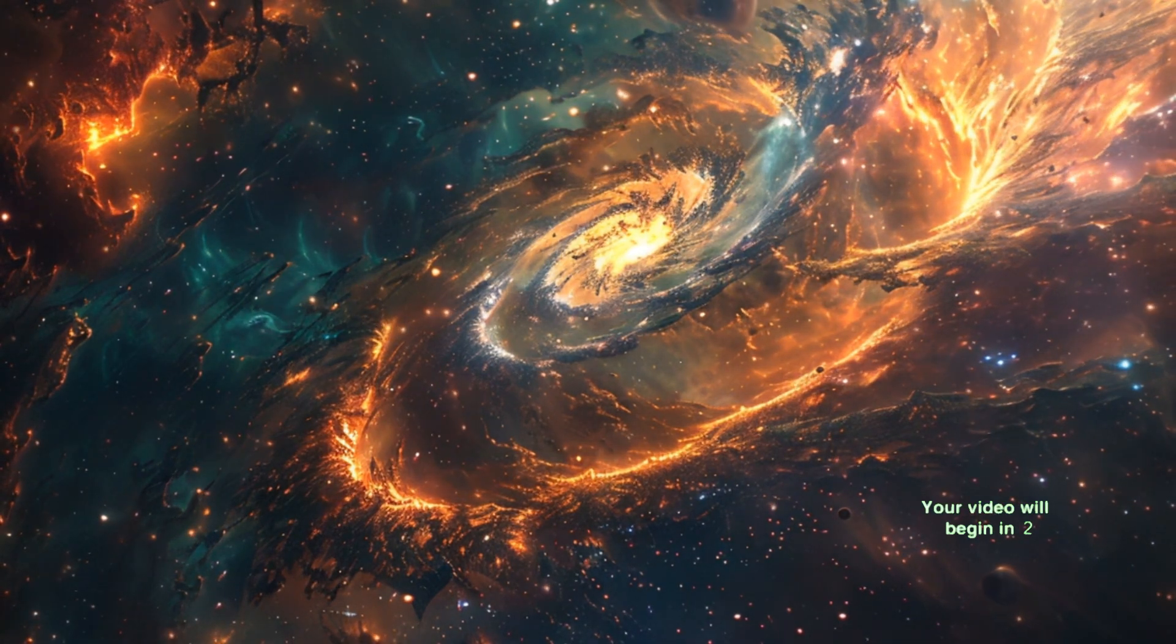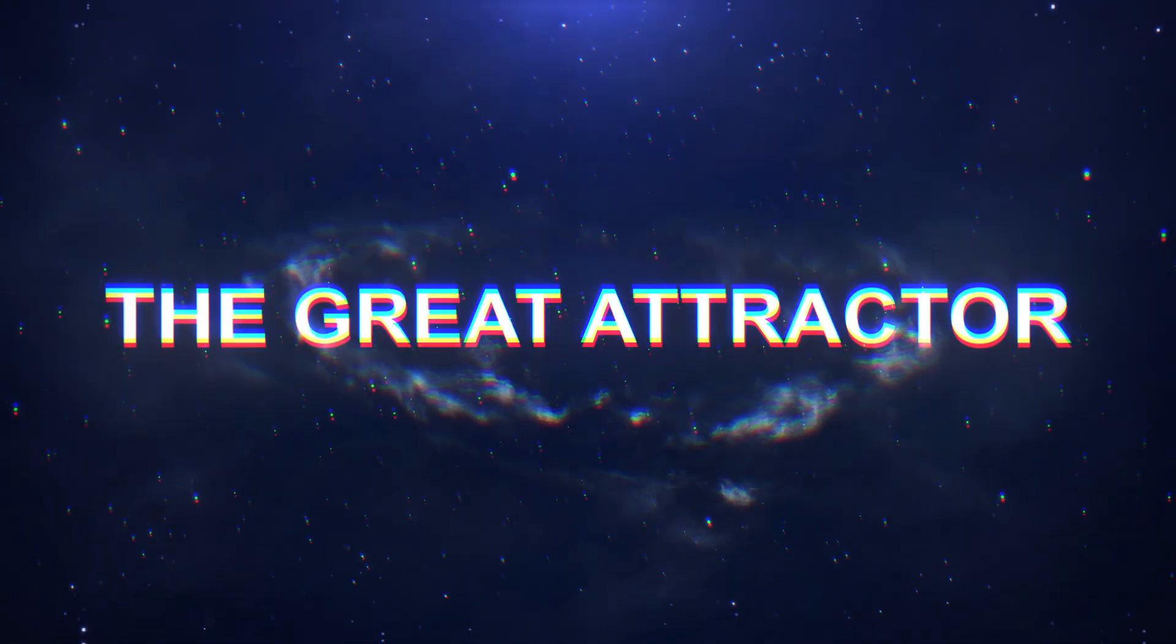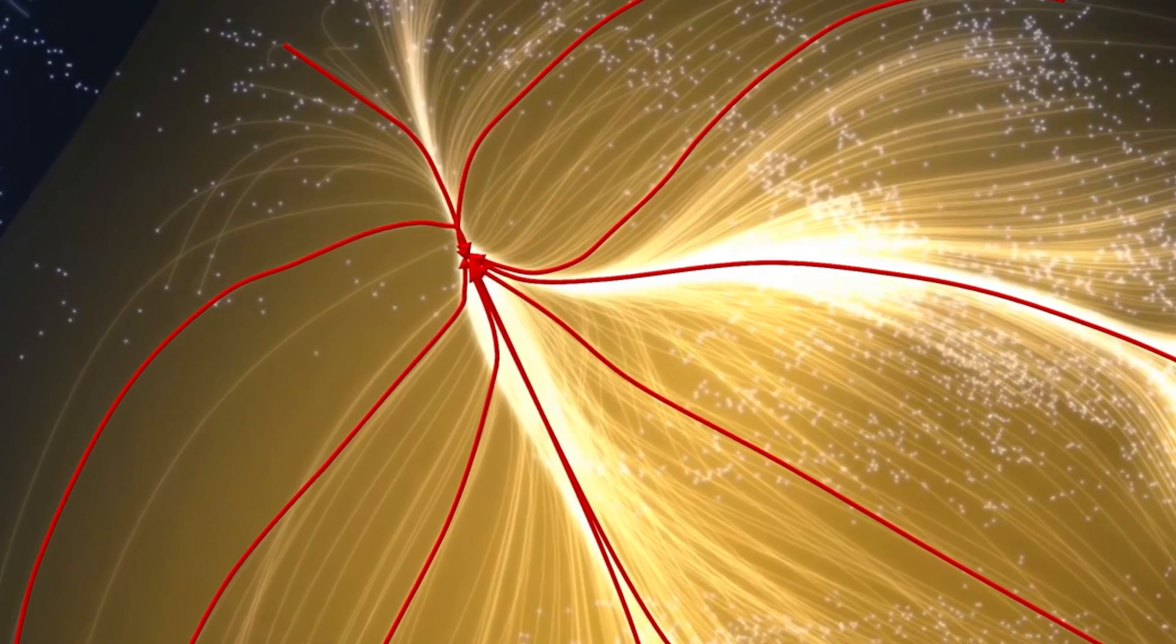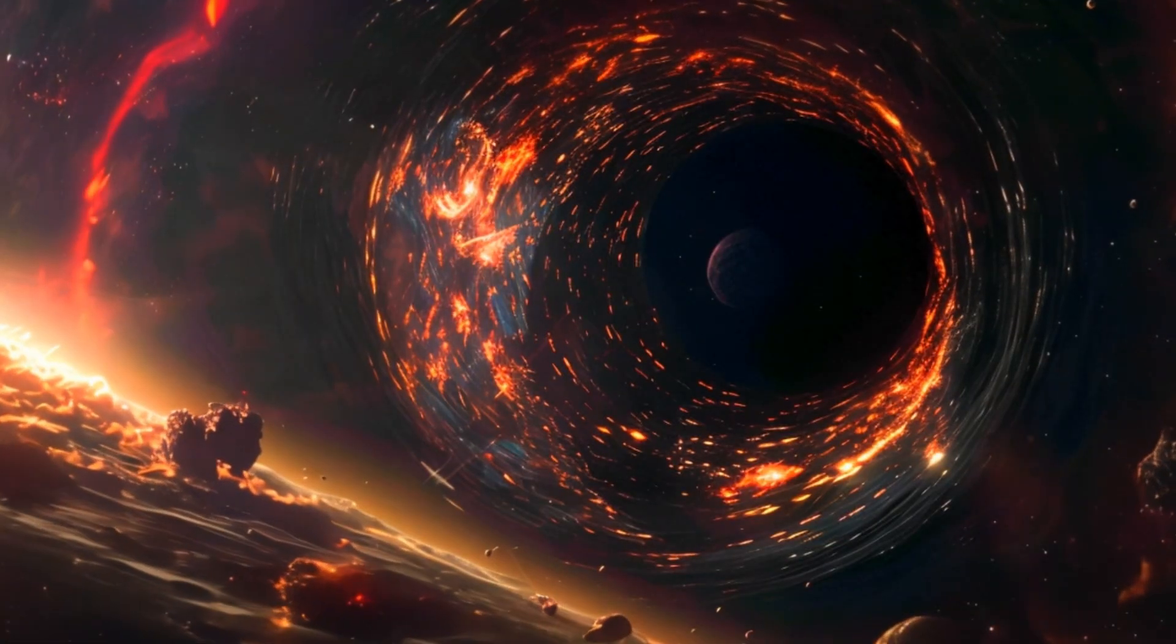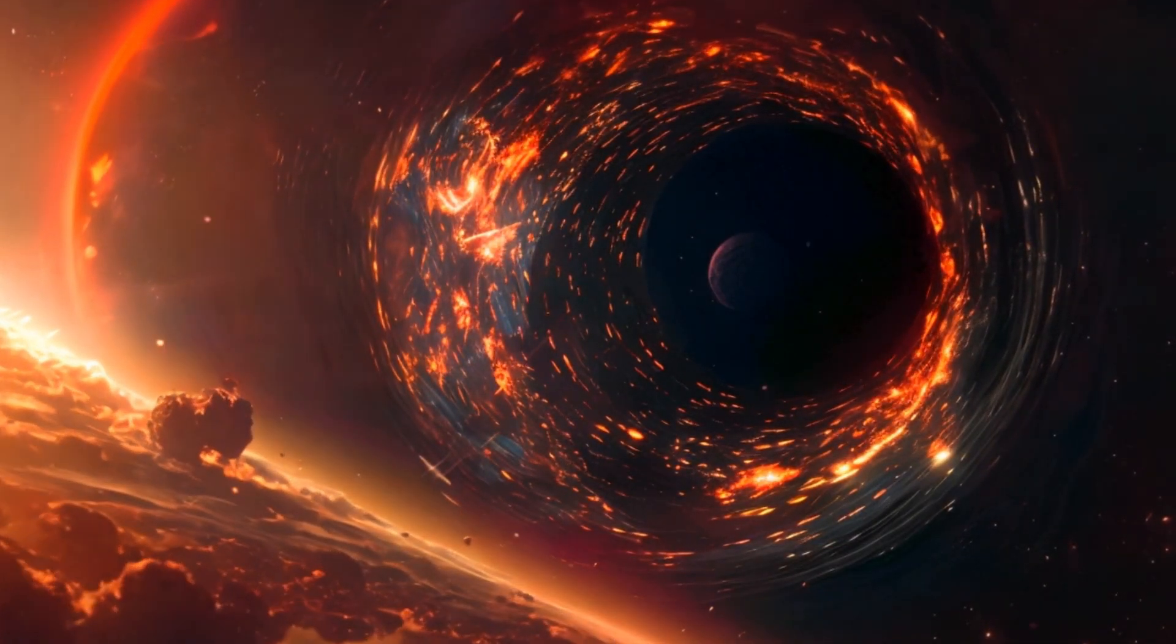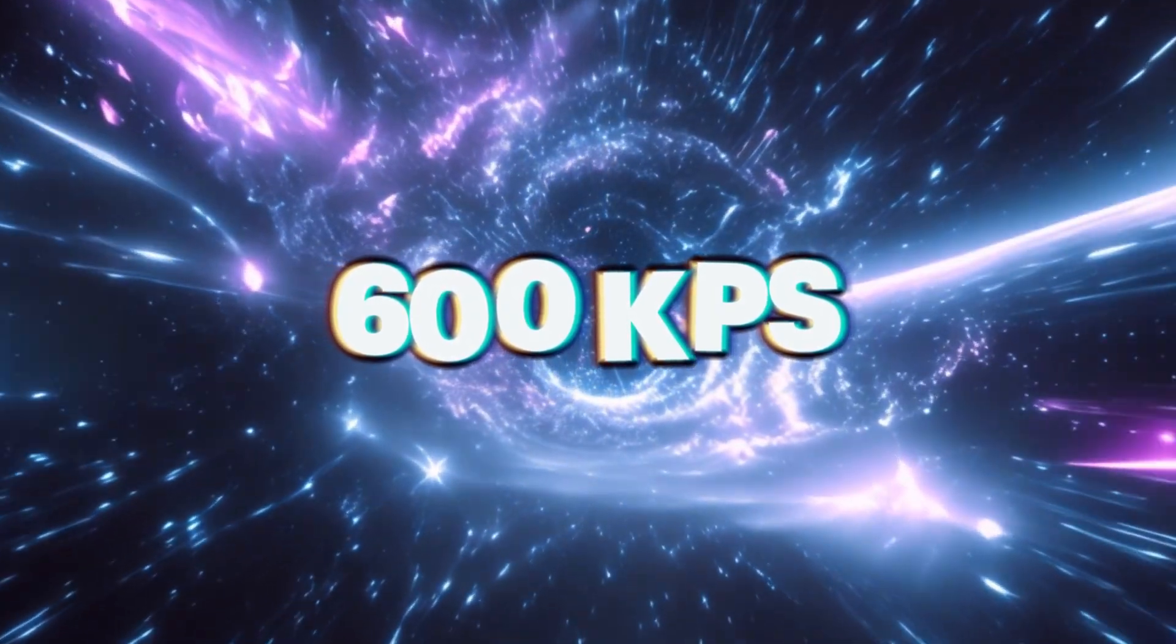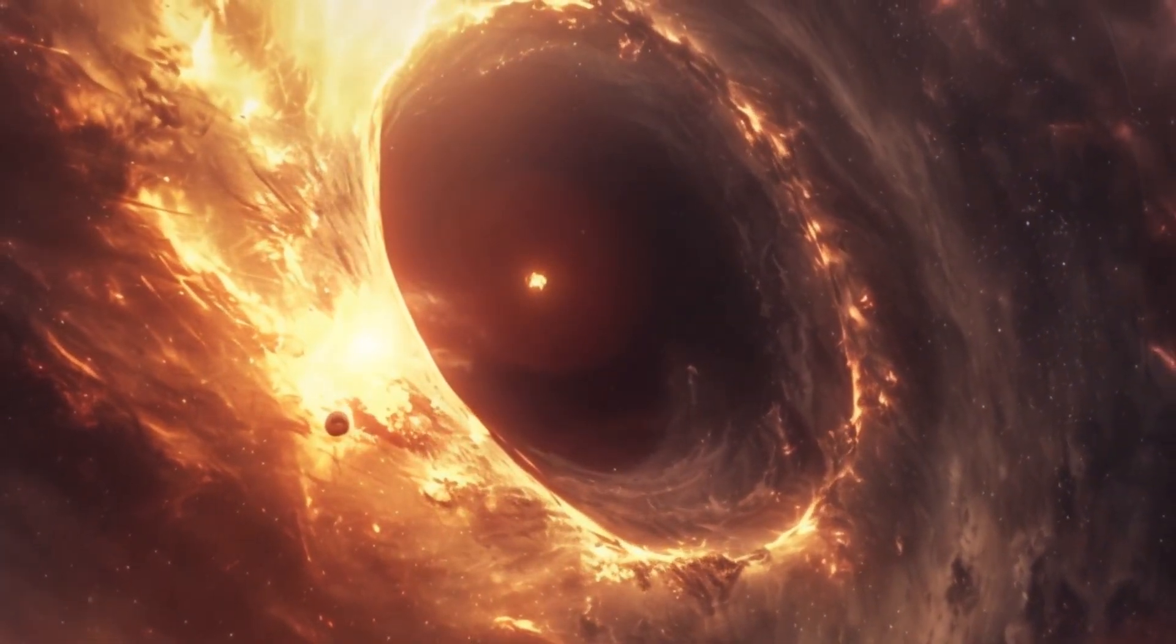The Great Attractor. In the heart of our local corner of the universe, a gravitational anomaly known as the Great Attractor challenges our understanding of space. It's a colossal force that's pulling our Milky Way galaxy along with hundreds of other galaxies towards it at an astonishing speed of 600 kilometers per second. But what exactly is the Great Attractor? Is it a supermassive black hole, a huge concentration of galaxies, or something else entirely?